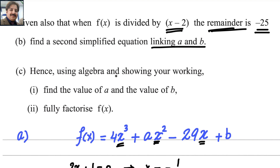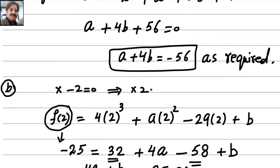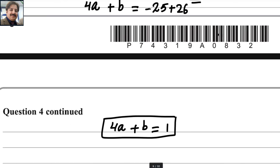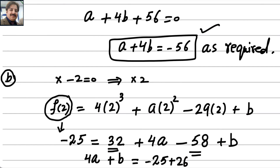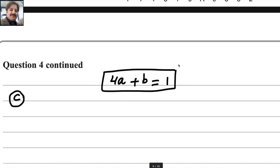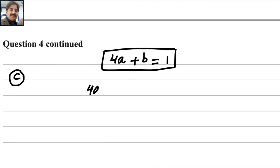For the third part, we find the values of a and b using algebra. We now have two equations: a plus 4b equals negative 56, and 4a plus b equals 1. To eliminate b, we make the coefficients of b equal. The coefficient of b in the second equation is 1, and in the first it is 4, so we multiply the second equation by 4: 16a plus 4b equals 4.